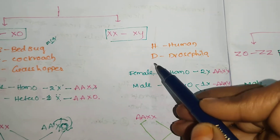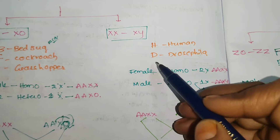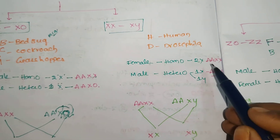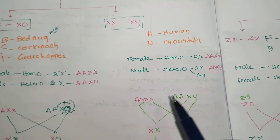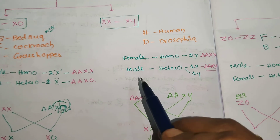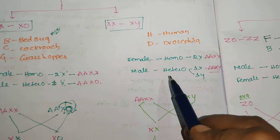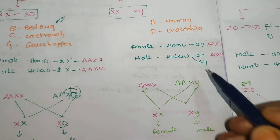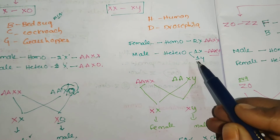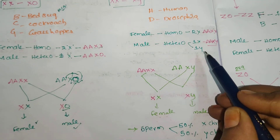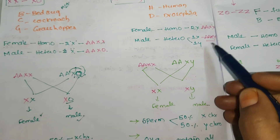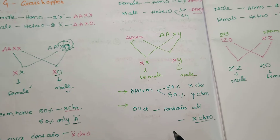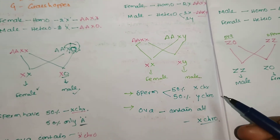The XY type is seen in HD — humans and Drosophila. Here, females are homogametic, having two X chromosomes. Males are heterogametic: 50% X chromosomes and 50% Y chromosomes. So here again, the male decides the sex of the organism.